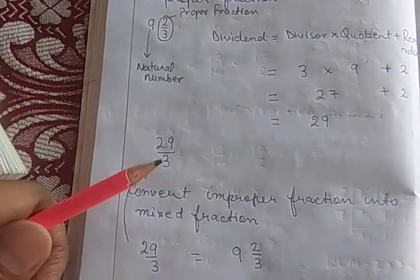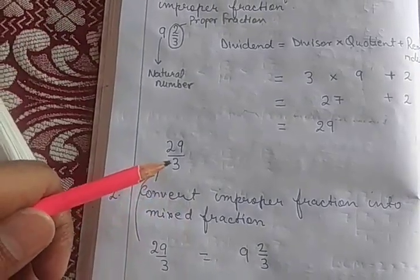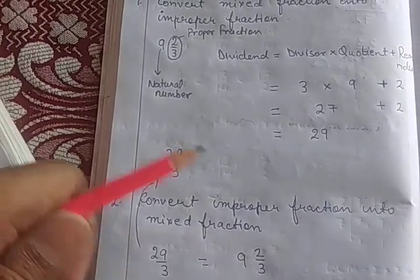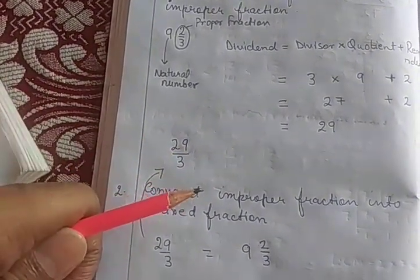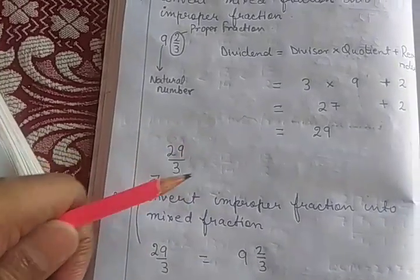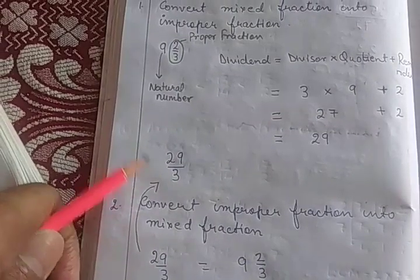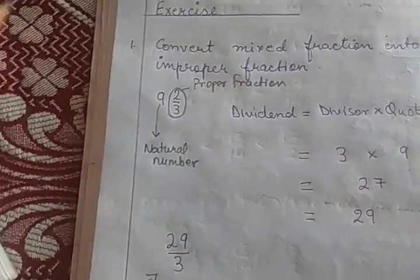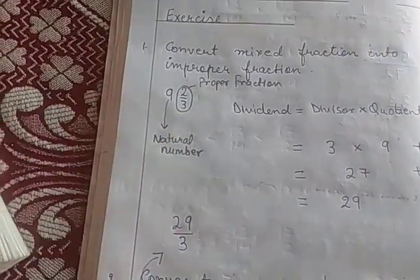Similarly, to convert back from improper to mixed fraction: divide 29 by 3 — quotient is 9 and remainder is 2. So 2 will be on the upper side, 3 remains as it is, and 9 comes in the middle part. You can convert mixed into improper and improper into mixed.